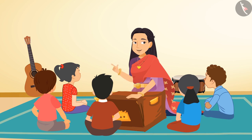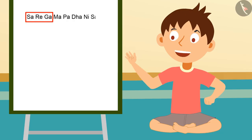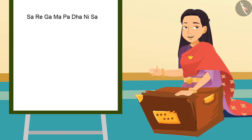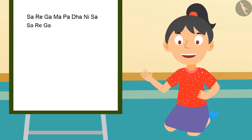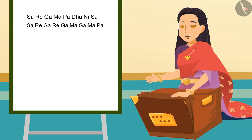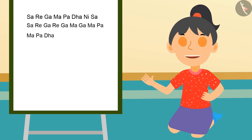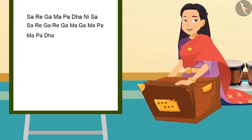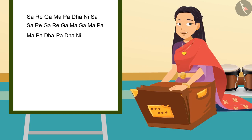Let's make a new pattern now. Can we take three notes together? Yes, why not! If we take three notes together like this — Sa, Re, Ga — then what will come after this? Re, Ga, Ma. After this Ga, Ma, Pa. Wow! Ma, Pa, Dha. Wow! Pa, Dha, Ni. Very good! So what is the rule of this pattern?